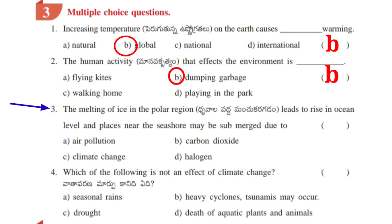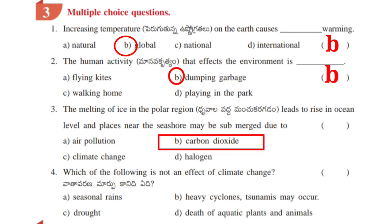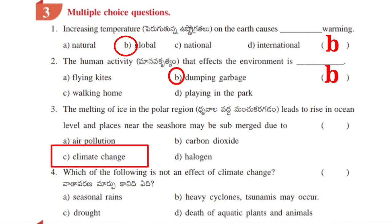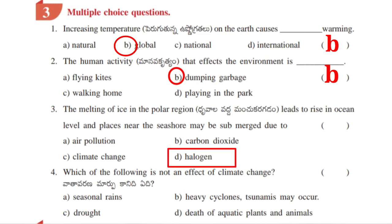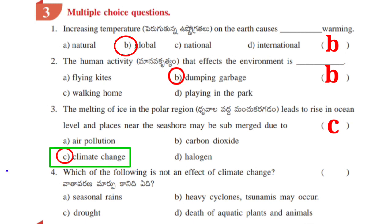Third question: the melting of ice in the polar region leads to rise in ocean level, and places near the seashore may be submerged due to A. Air pollution, B. Carbon dioxide, C. Climate change, D. Halogen. Answer is C. Climate change.